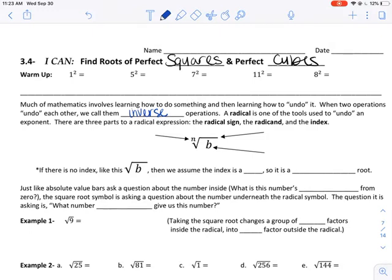A radical is one of the tools used to undo an exponent. There are three parts to a radical expression: the radical sign, the radicand, and the index.